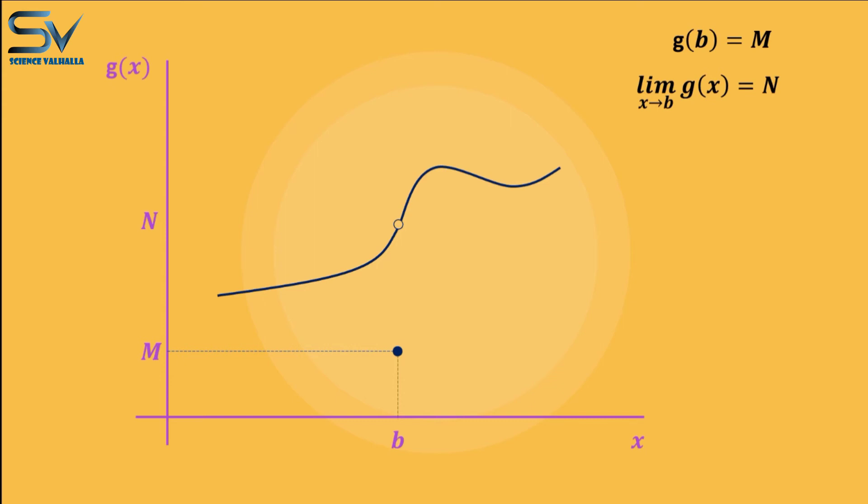So, at this point, the value of function and the limit of function are different. We can deduce from this that the function is discontinuous at X equals B.